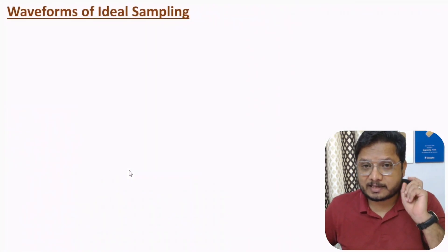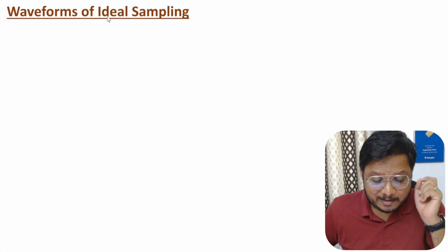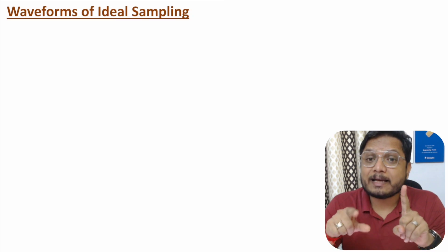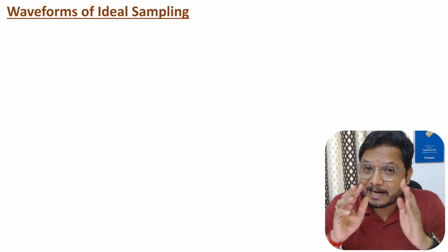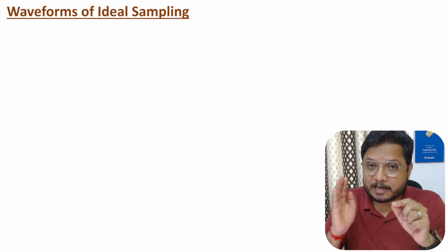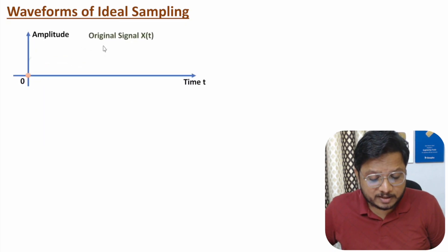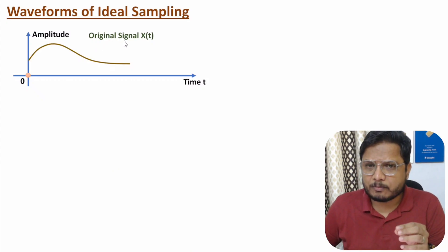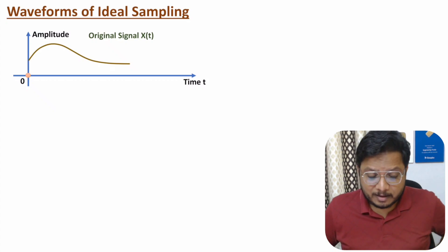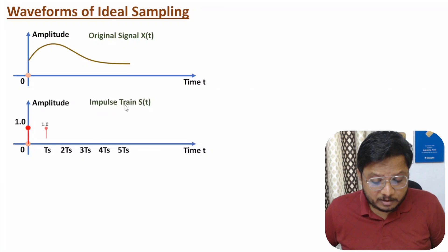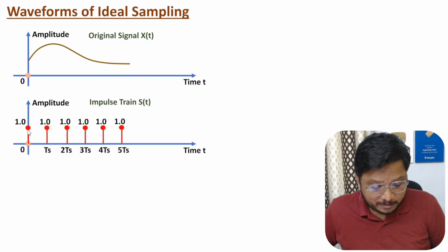Let us start with the first agenda: waveforms of ideal sampling. Ideal sampling is also known as impulse sampling and instantaneous sampling. In ideal sampling, what we do is we multiply the original signal with an impulse train. Here in the waveforms, we have the original signal x(t), with maximum frequency fm. We will be multiplying the impulse train with the original signal, and you can observe the impulse train here. The spacing between impulses is Ts.